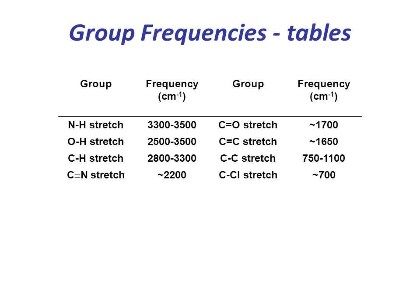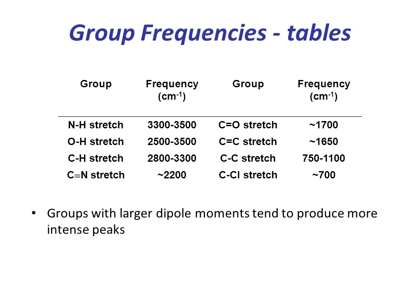Besides a table of group frequencies, it is useful to keep a couple of other things in mind. First, the intensity of a peak in the spectrum is related to the dipole moment of the group. This means that not all groups present in a molecule may be visible as peaks in its IR spectrum. For example, the C-C stretches in hexane are not visible in the spectrum because vibration of the C-C bonds causes very little change in the molecular dipole moment.